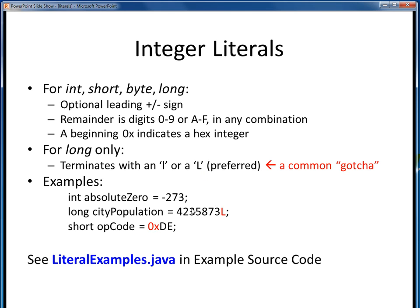Here's a gotcha that often throws students. In these examples, we've got an int variable for absolute zero with a value of negative 273 — here's that optional leading minus sign. Here's a literal for some population variable, and because it's of type long, the number must have a trailing L. And here's an integer literal for some opcode variable whose value is hex DE, with a required leading 0x.